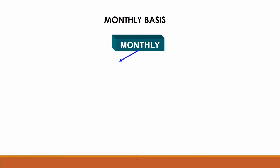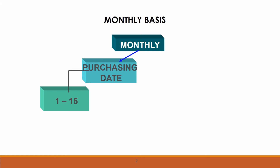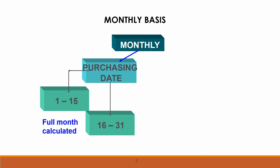This is the format of the monthly basis when we want to purchase the asset. When you want to purchase the asset from the 1st to the 15th, we must calculate a full month of depreciation. And when we purchase from the 16th until the 31st of the month, we must not include the date of purchase.